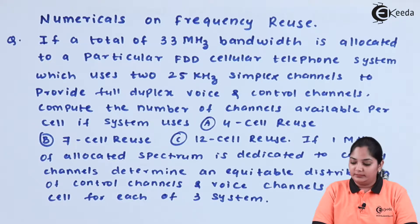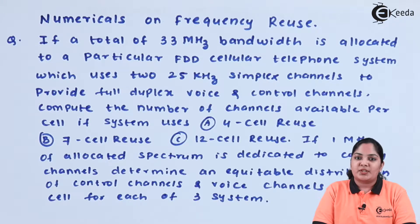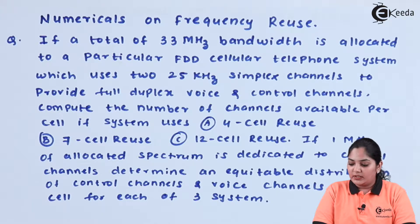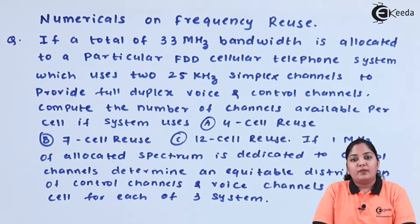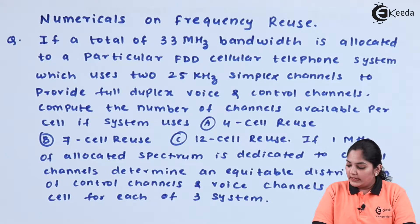The question is as follows. If a total of 33 MHz of bandwidth is allocated to a particular FDD cellular telephone system which uses two 25 kHz simplex channels to provide full duplex voice and control channels, compute the number of channels available per cell if the system uses: (a) 4 cell reuse, (b) 7 cell reuse, and (c) 12 cell reuse. If 1 MHz of the allocated spectrum is dedicated to control channels, determine an equitable distribution of control channels and voice channels in each cell for each of the three systems.